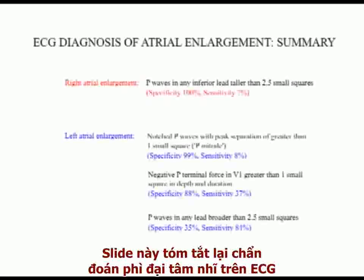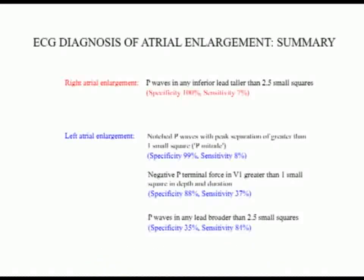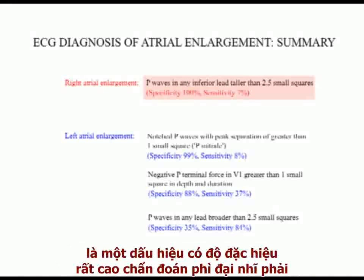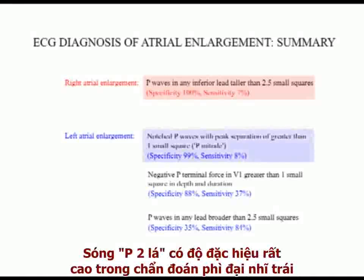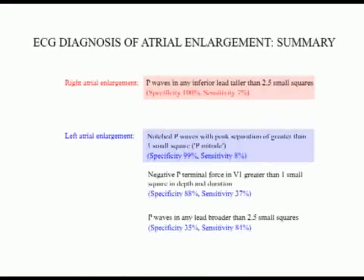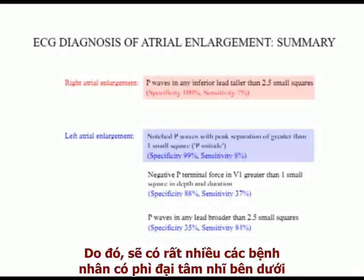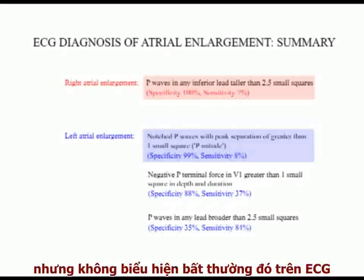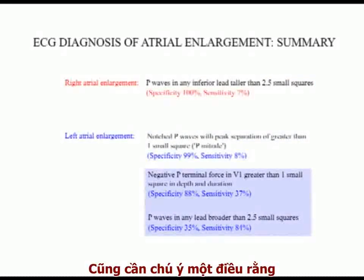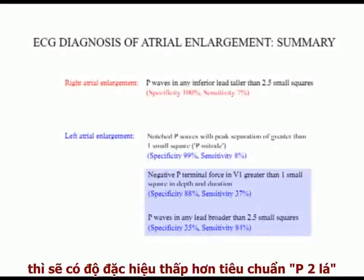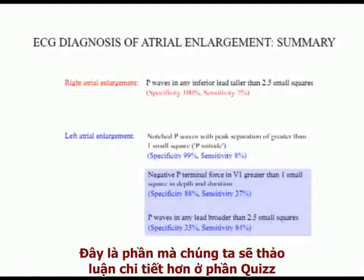This slide summarizes the ECG diagnosis of atrial enlargement. P-waves taller than 2.5mm in amplitude in any of the inferior leads is a very specific finding for right atrial enlargement, and P-mitrale is very specific for enlargement of the left chamber. However, many patients with underlying enlargement of the chambers do not demonstrate these abnormalities on their ECG, reflecting the poor sensitivity of these criteria. Note also that the more sensitive ECG criteria for diagnosing left atrial enlargement are considerably less specific than P-mitrale.